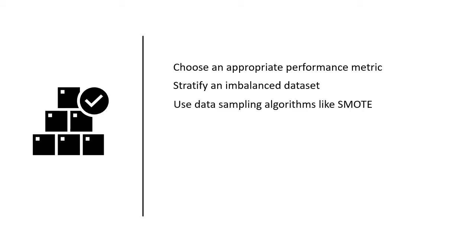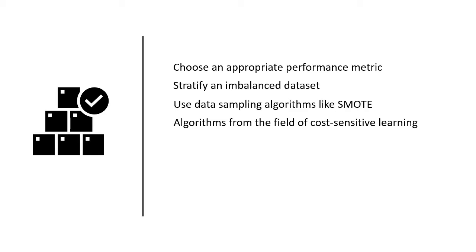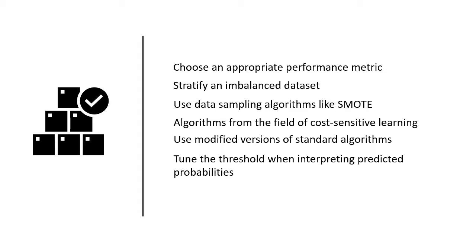You're also going to learn how to use data sampling algorithms like SMOTE to transform the training dataset from an imbalanced dataset when fitting a range of standard machine learning models. You'll learn how algorithms from cost-sensitive learning can be used for imbalanced classification, and how to use modified versions of standard algorithms like SVM and decision trees to take class weighting into account.